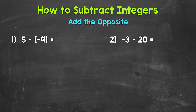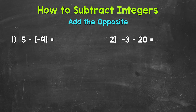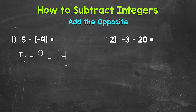Here are our examples for subtracting integers. Let's jump into number 1 where we have 5 minus negative 9. When we subtract integers, we are actually going to add the opposite. So if you are able to add integers, you are going to be able to subtract. The opposite of subtraction is addition, and then we take the opposite of the number we are subtracting. So we have 5, and we add the opposite of negative 9, which is positive 9. So 5 plus 9 gives us positive 14 — our final answer.